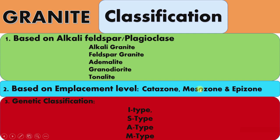Mesozone granites are at an intermediate emplacement level where magmatic and metamorphic rocks can be more easily distinguished, and they show common roof pendants. Epizone granites are shallow, found within a few kilometers of the surface, emplaced in brittle sedimentary or volcanic rocks. They are associated with contemporary volcanism, narrow contact metamorphic zones, and have great economic mineral deposits.